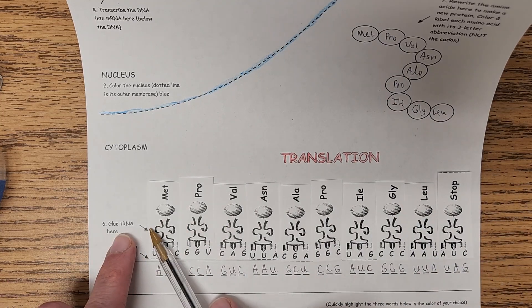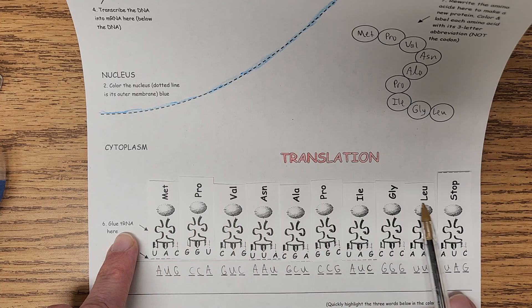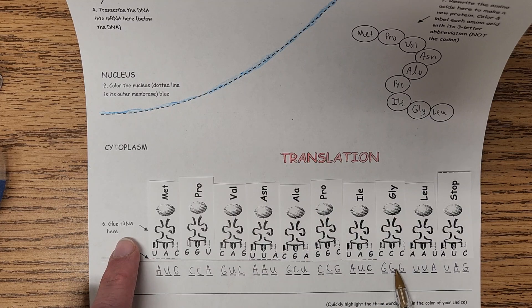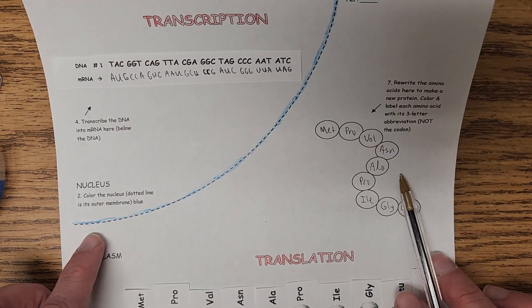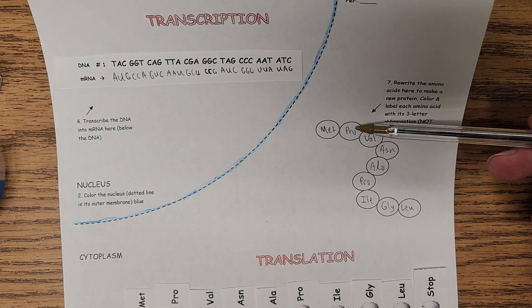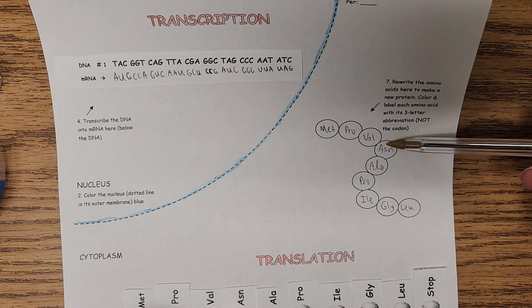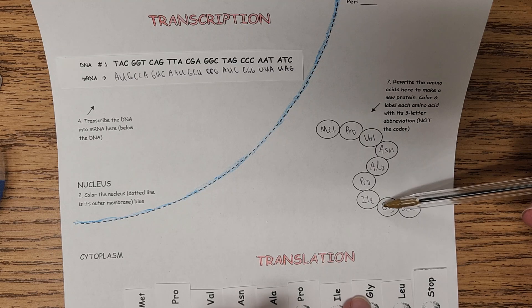Okay, once you've done that, that's direction six, cut out the tRNAs and put them here in the order specified by your mRNA sequence. Once you've done that, you can follow direction seven, which is rewrite the amino acid sequence here. So see the MET? I write that here. That's methionine, proline, valine, and so on and so on, all the rest of them until you have copied down the whole thing.